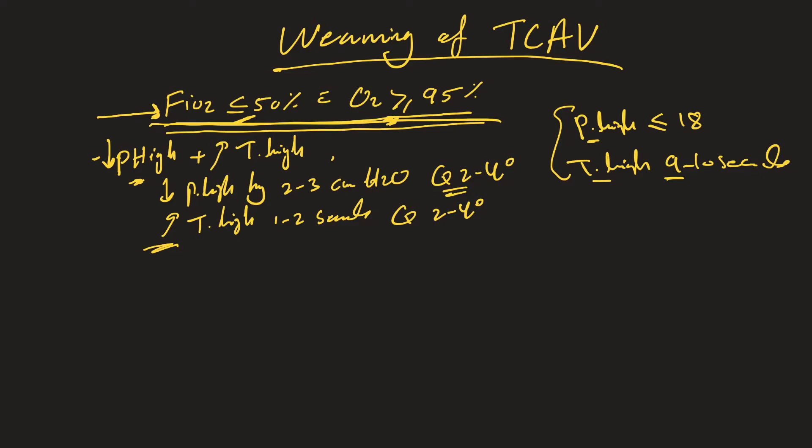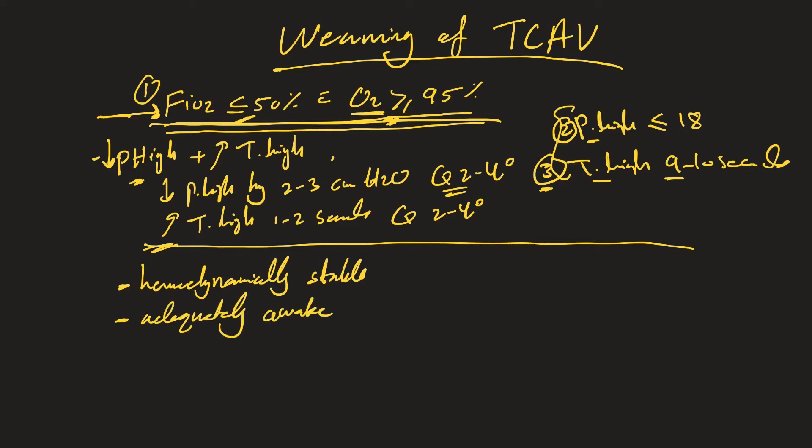Also hemodynamically stable, not on vasopressors, then we start thinking maybe the patient is ready for a spontaneous breathing trial. Let me mention that again: FiO2 equal or less than 50% with O2 sat equal or above 95%, P high equal or less than 18, T high 9 to 10 seconds. The patient also hemodynamically stable, not tachypneic, not tachycardic, not on vasopressors, adequately awake. If they are paralyzed you need to make sure they are off paralytics as well.